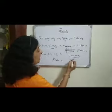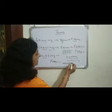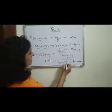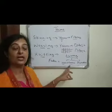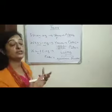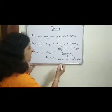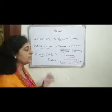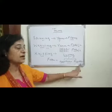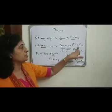Looms are of two types. First is hand looms — the looms which are operated by hands. Second is power looms, which work on electric power. With the help of looms, we can convert yarn into fabric.